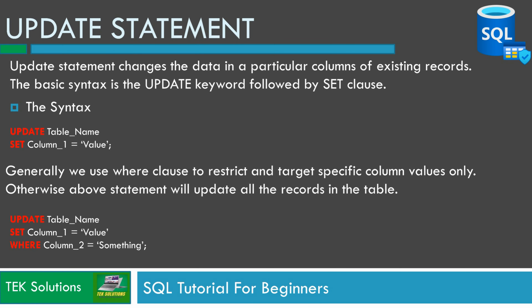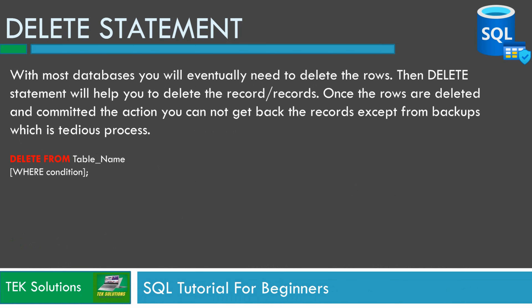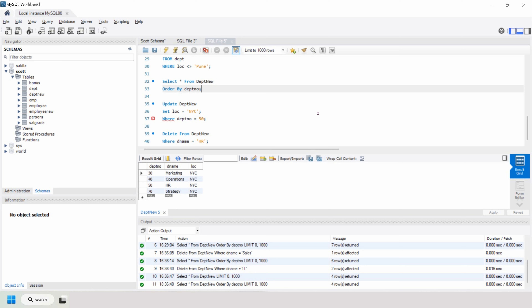Next is the DELETE statement. With most databases you will eventually need to delete rows, and the DELETE statement will help you do that. Once rows are deleted and committed, you cannot get the records back except from backups, which is a tedious process. So make sure you are targeting the right records when deleting. The syntax is: DELETE FROM table_name WHERE condition — the WHERE condition is optional. Let's see this with the DPT_NEW table.